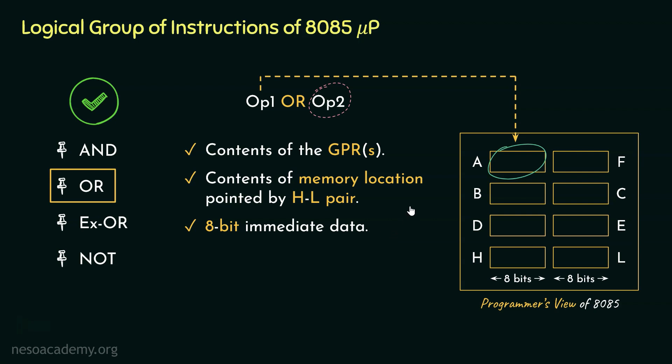The instructions that we are going to learn today — ORA R is going to handle the first two cases. On the other hand, the next instruction ORI D8 will handle the 8-bit immediate data situation.